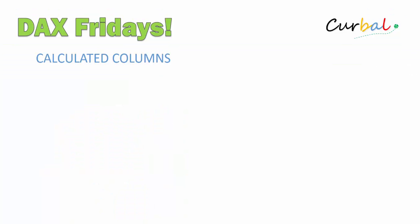I cannot believe I haven't done this video yet, but better later than never. So without any more delay, let's jump ahead. A calculated column is used for row-by-row calculations like in Excel. And I know this doesn't say anything to you, so I'm going to give you an example. Let's go to Power BI.